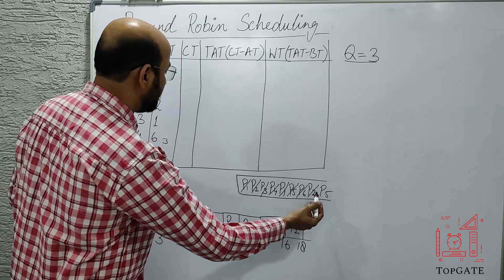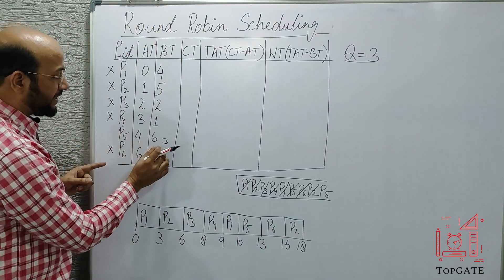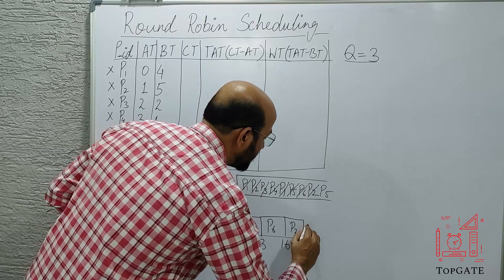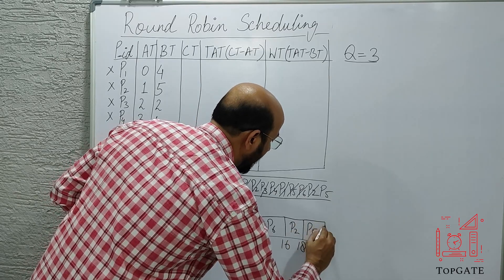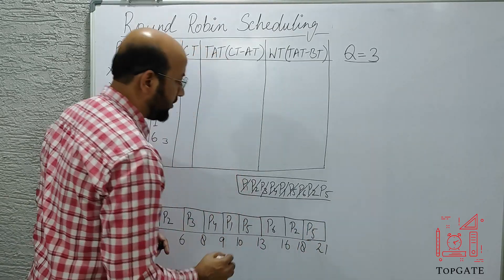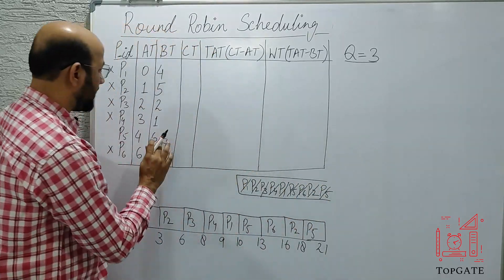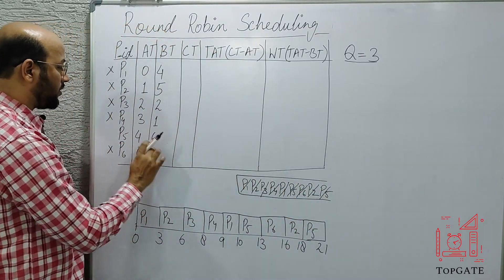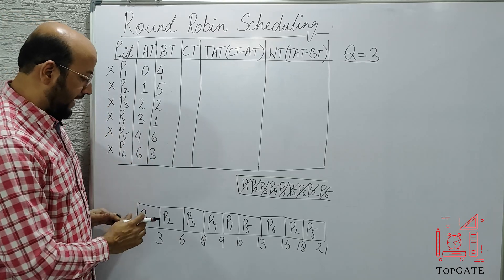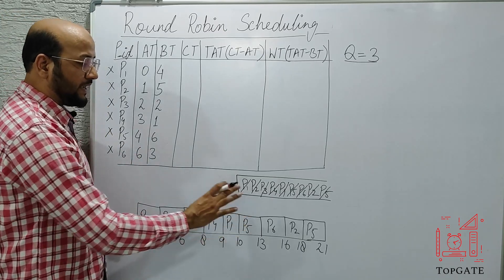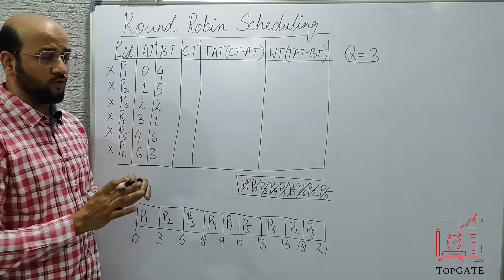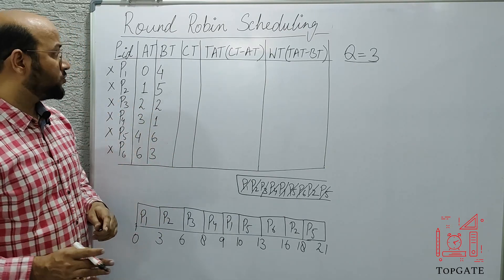Now at the head of the ready queue we have P5. P5's remaining burst time is three, so P5 starts at 18 and completes at 21. I cut it and it is terminated. All processes have been scheduled, and this is the Gantt chart for the Round Robin scheduling algorithm for this example.